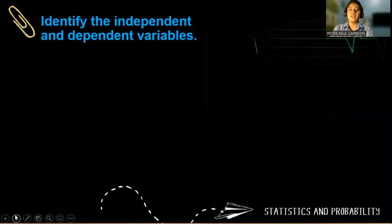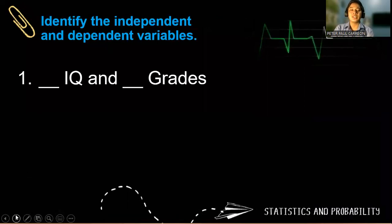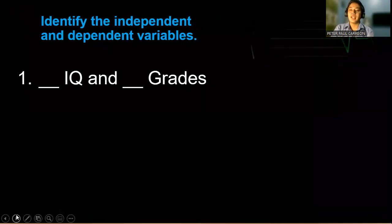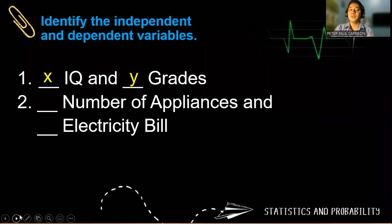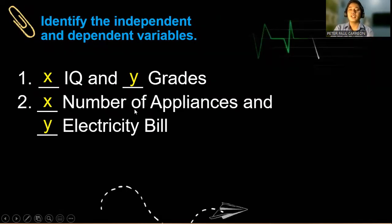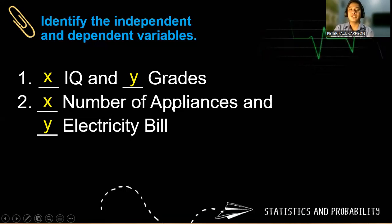So let us identify the independent and the dependent variables given this situation. IQ and grades. So our independent is IQ, and the grades is dependent to IQ. Number two, the number of appliances and electricity bill. So the correct answer is the number of appliances is our independent, and our dependent, of course, is electricity bill.